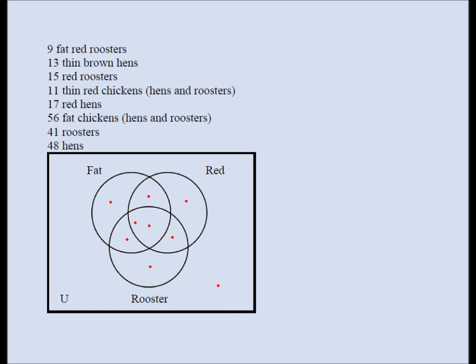You really have to understand that a three-set Venn diagram involves eight regions: one, two, three, four, five, six, seven, eight.